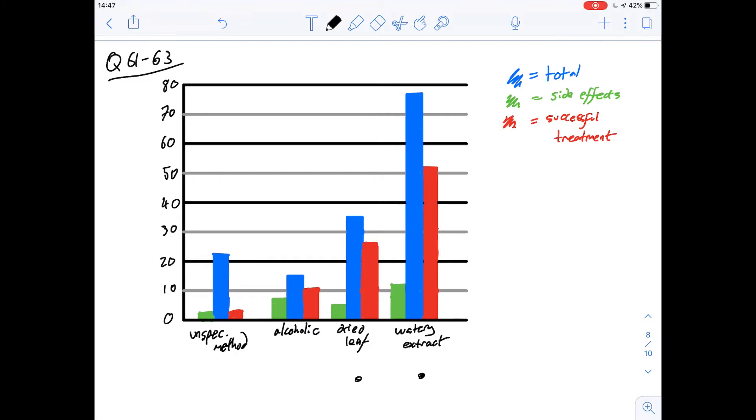So looking at the green bar we can see that proportional to the total which is a blue bar there's going to be less side effects using the dried leaf method or so it seems but if you look at the red bar in comparison to the blue bar you can see that actually the dried leaf preparation has a greater percentage of people that are treated successfully.